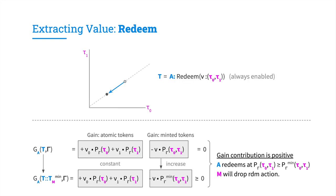Finally, we have the redeem layer. The redeem action can always be executed in any reserve state — it is always enabled. The gain of a redeem action alone is zero, as given by a previous lemma. However, in a solution concluding with a price minimization swap by miner M, the gain contribution from minted tokens increases — because the minted token price is decreased, the negative expression on the right increases, making the gain contribution for the overall solution positive. The intuition is that user A can redeem at a higher minted token price, obtaining more value in atomic tokens. That is why M will always drop the redeem action.